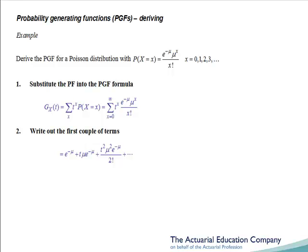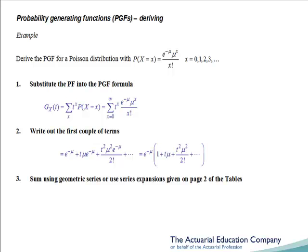Now it's not immediately clear what's going on, so if we take out a factor of e to the minus mu, that might help us see. Looking at the series inside the brackets, we see that it is not a geometric series. Because to get from the first to the second term, we have multiplied by t mu, but to get from the second to the third term, we have multiplied by something different, t mu over 2. And so it's not a geometric series.